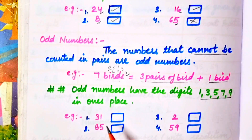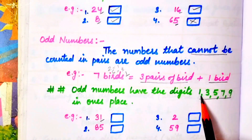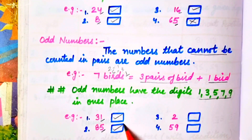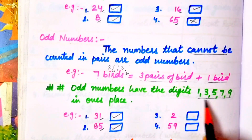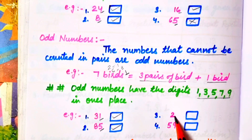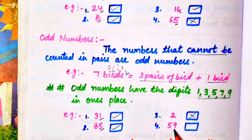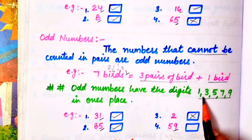So this is also our odd number — we check the ones place. Next number is 85 — ones place is 5, so this is an odd number. Next number: ones place is 2, so that is not odd. Numbers like 13579 — ones place is 9, so it is an odd number. Next is 59 — 9 is in the ones place, so this is also an odd number.